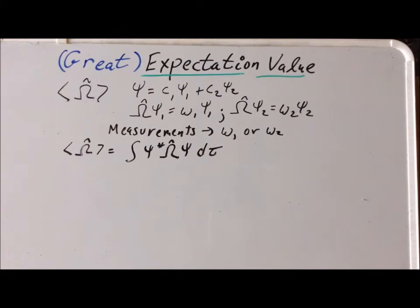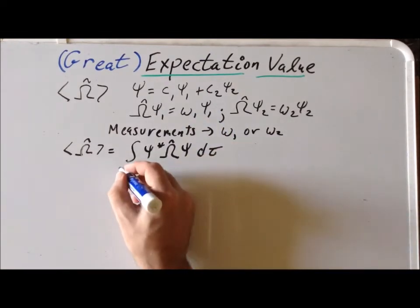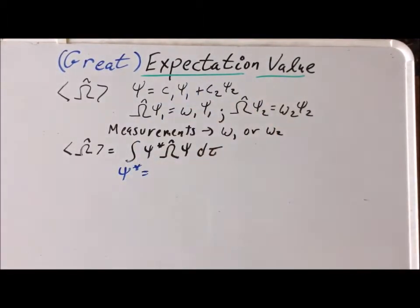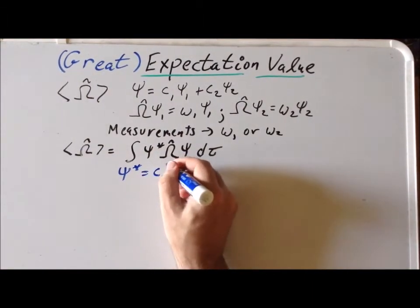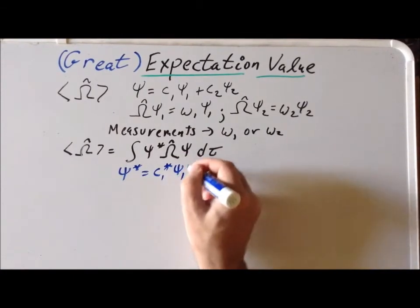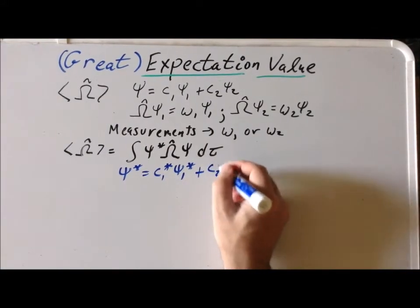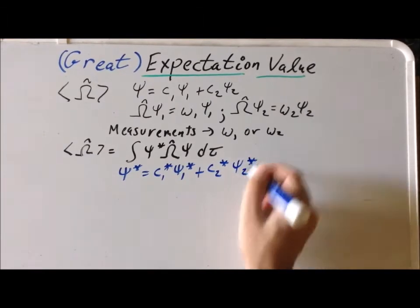So we want to evaluate this particular integral. We already know the value of psi because we've assumed it to be this particular linear combination. What would psi star be? Psi star is the complex conjugate. To do that, we simply replace each of these expressions by their complex conjugate. So we have c1 complex conjugate times psi1 star. We're assuming that c1 and c2 could possibly be complex, so when we form the complex conjugate psi star, we need to replace c1 and c2 by their complex conjugates.